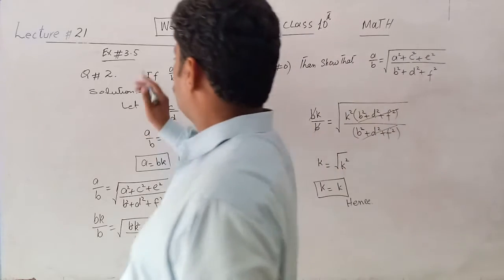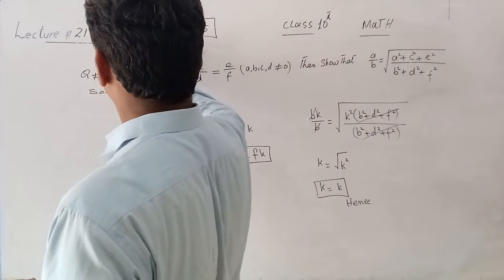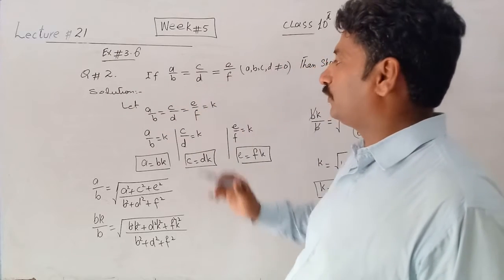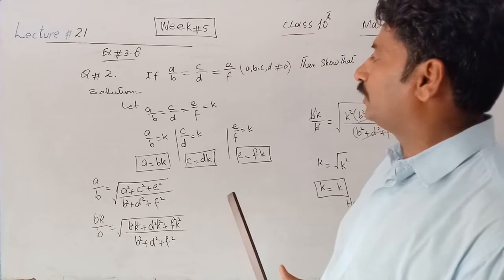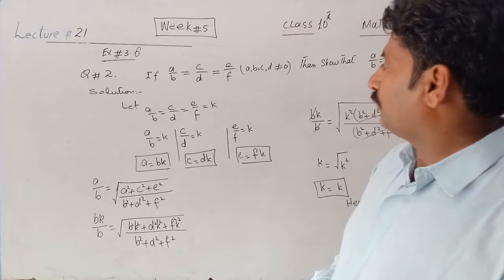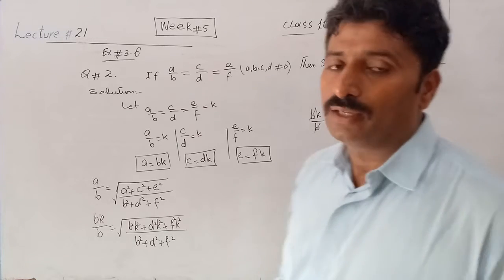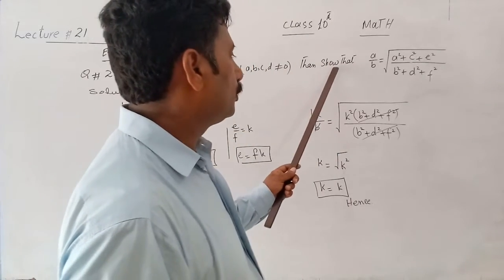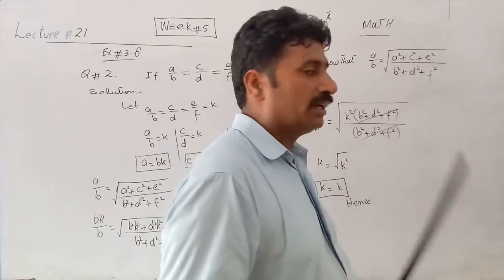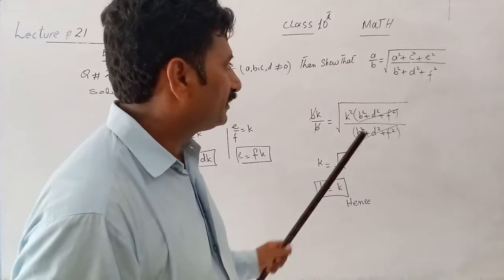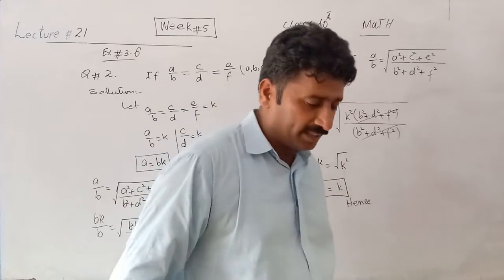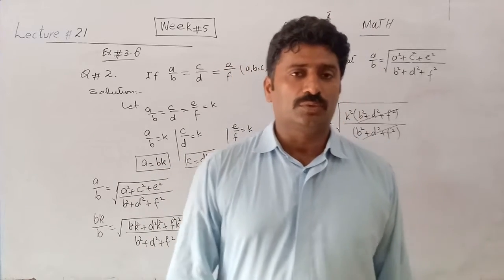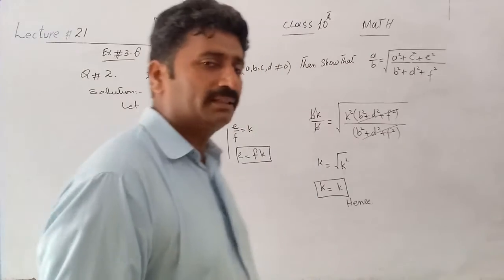Basically, question number 2 is: If A/B = C/D where winning value does not equal zero, then show these values are equal. So basically, we will use the K-method. We will check the K-method to complete this solution.